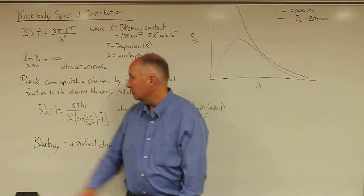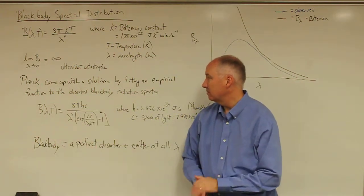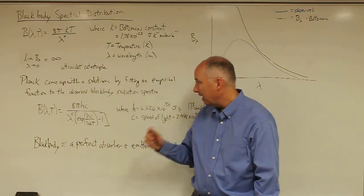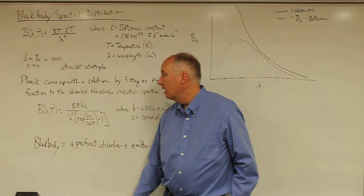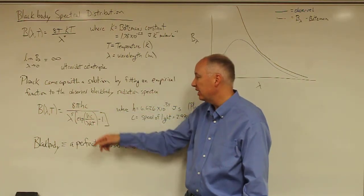What happened is that Planck came up with a solution to this by fitting an empirical function to the data. This empirical function is that the blackbody radiation distribution is equal to 8πhc,